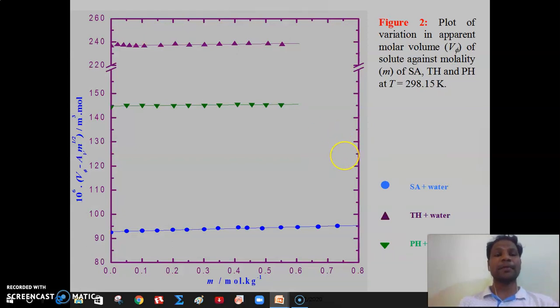The variation of apparent molar volume as a function of molality is shown in Figure 2. It is seen from the figure that V phi value increases with increase in the concentration of solute in the solution. Also it is found that V phi value increases with increase in temperature at a particular concentration of solute.